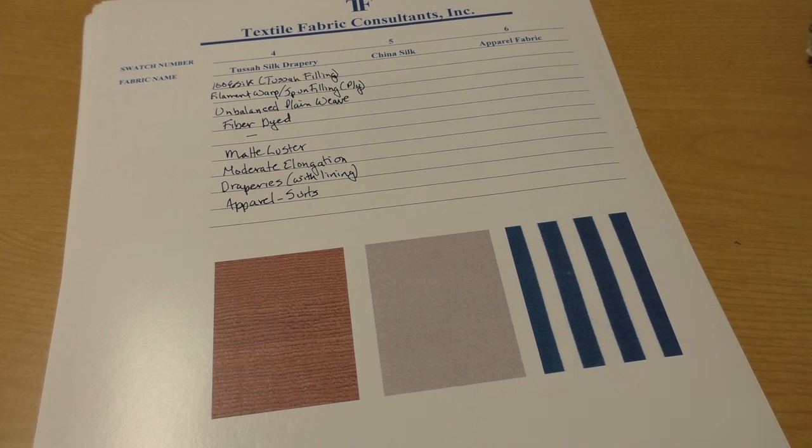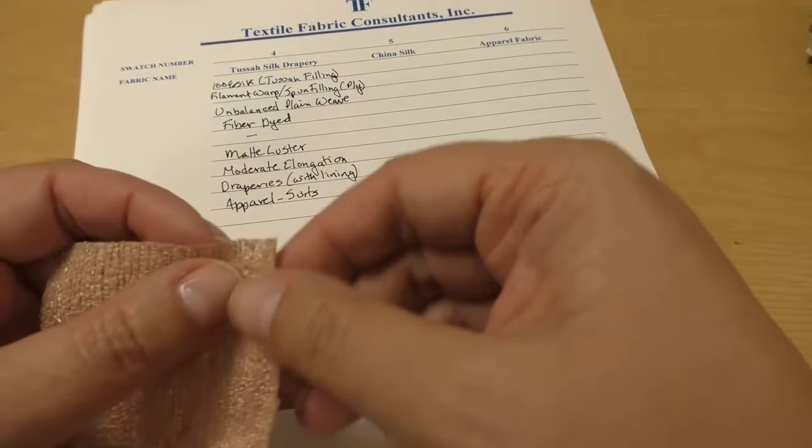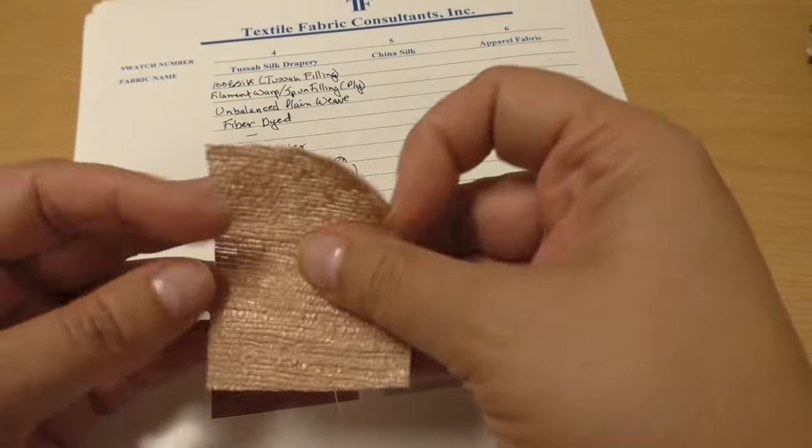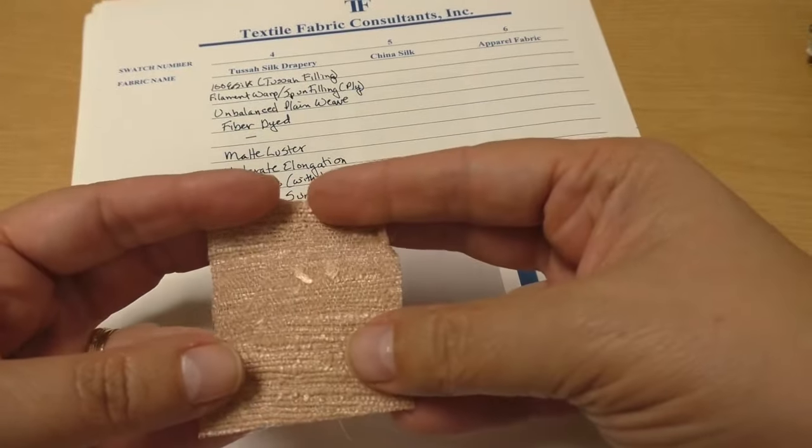Let's actually take a look at this fabric to see if we can see what we're talking about here. So here I have a swatch that is similar colored to the one that you have in yours. In this swatch, the yarns that are going in the short direction are the filling yarns.